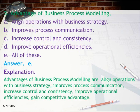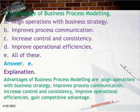Question 3: Advantages of business process modeling — A. Align operations with business strategy, B. Improves process communication, C. Increase control and consistency, D. Improve operational efficiencies, E. All of these. Answer: E. Explanation: Advantages include align operations with business strategy, improves process communication, increase control and consistency, improve operational efficiencies, and gain competitive advantage.